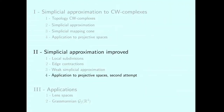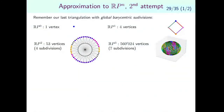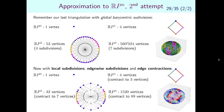Applying all improvements: starting from the RP^3 simplicial complex with many vertices obtained by the basic algorithm, using local subdivisions, edgewise subdivisions, and edge contractions, we obtain a much smaller simplicial complex. After a final contraction, we get RP^3 with only 89 vertices.